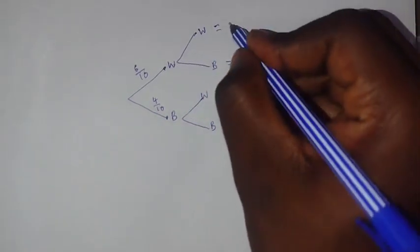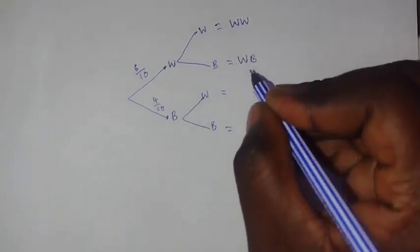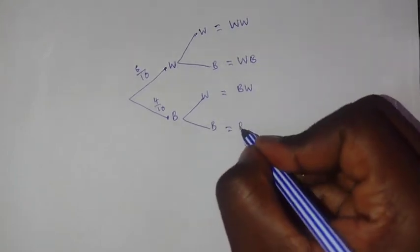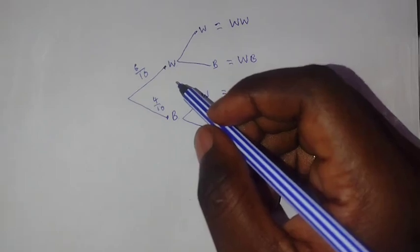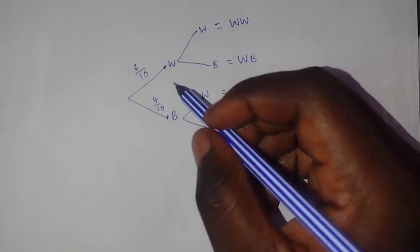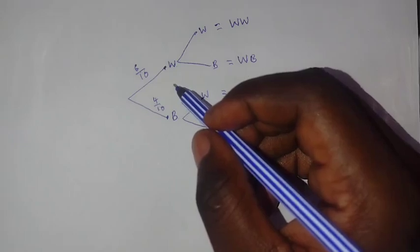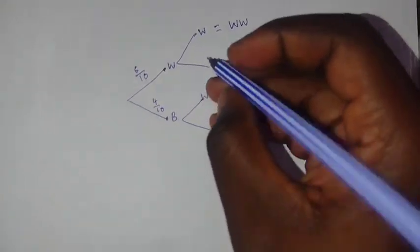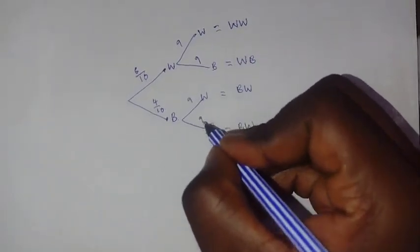Since the items are not replaced, the total for the second selection reduces from 10 to 9. The outcomes of the tree diagram are: white-white, white-black, black-white, and black-black. For the second selection, the total is 9 in each case.